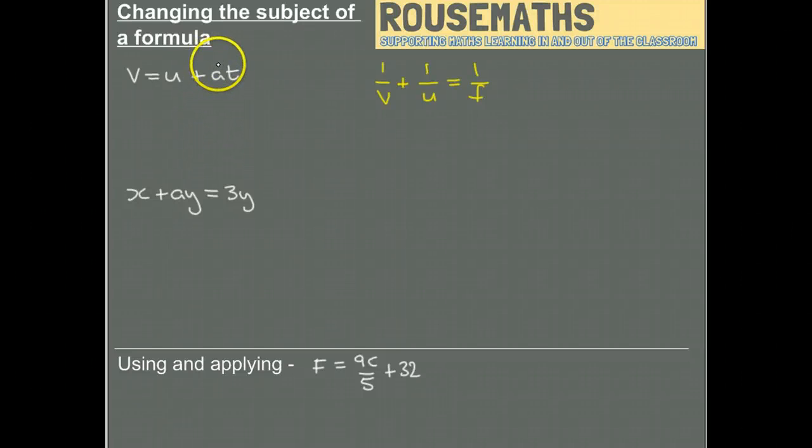Hello there, we're looking at changing the subject of a formula. Formulas can be written in a few different ways. They connect different variables together. This one, for example, connects final velocity of an object, the initial velocity of an object, its acceleration, and the time it's taken to travel.